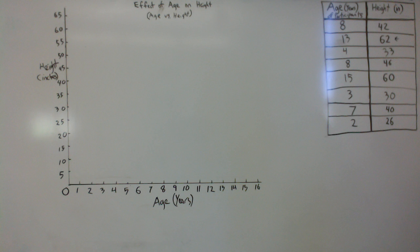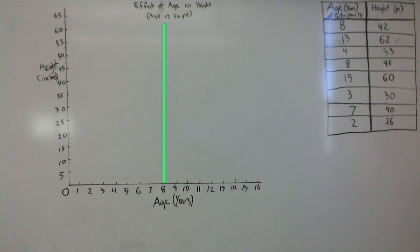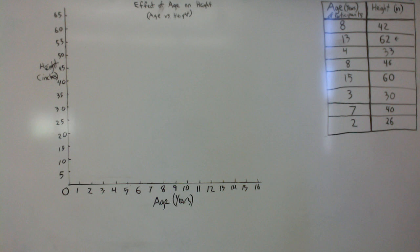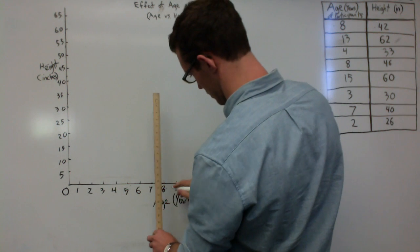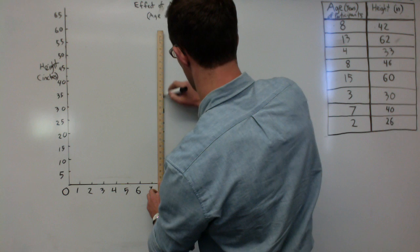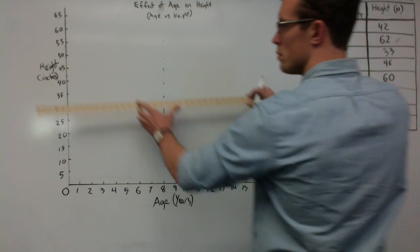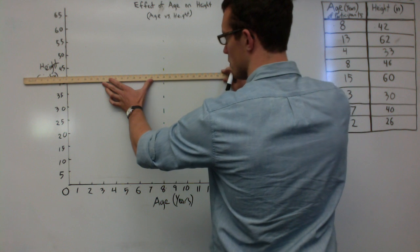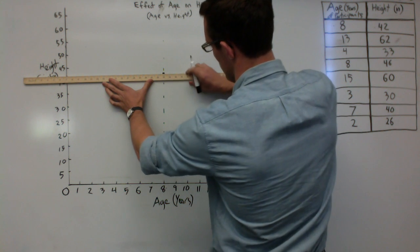Now at last we get to plot our data points. The first point is someone who is 8 years old and 42 inches tall. Anyone who is 8 will be found on a line directly above 8 years old on the x-axis, and anyone who is 42 inches tall will be found on a line directly to the right of 42 inches on the y-axis. So this person must go where these two lines intersect. Draw a faint line extending up from 8 years old using a straight edge, then draw a second line extending out from 42 inches on the y-axis — 42 inches falls between 40 and 45, a little closer to 40. Place a point where these two lines intersect, then erase the lines.